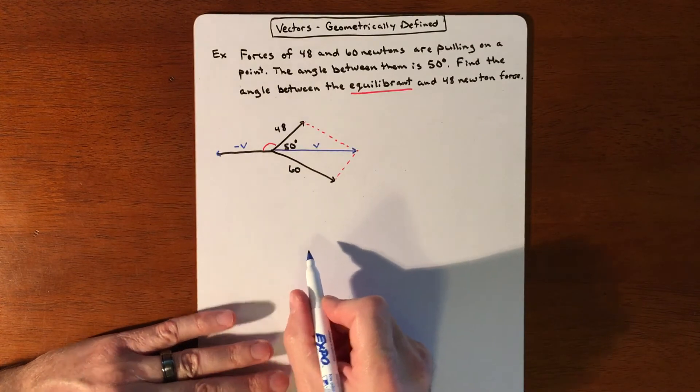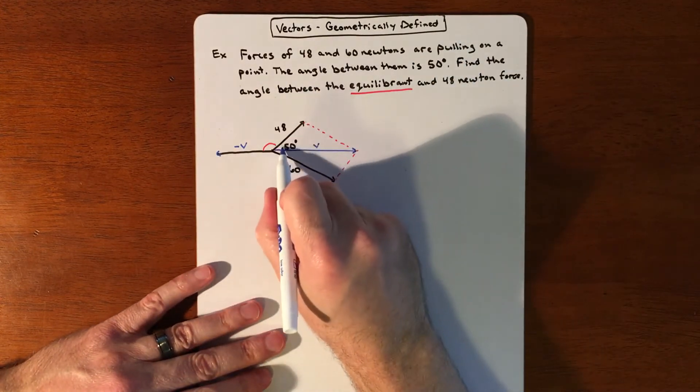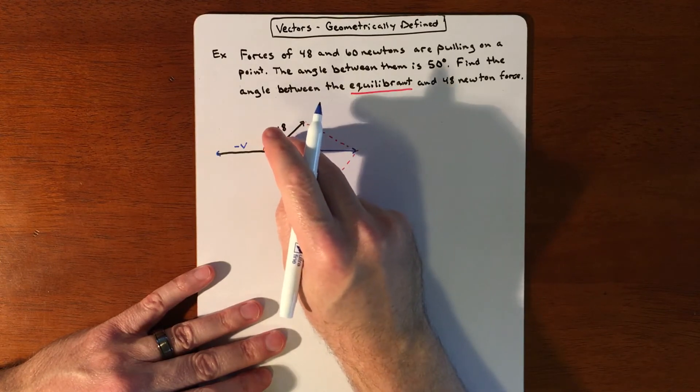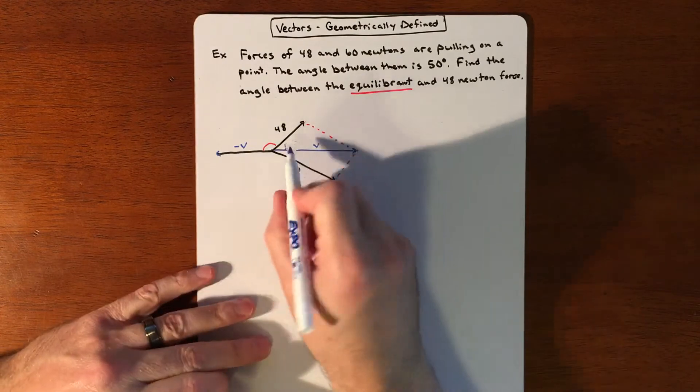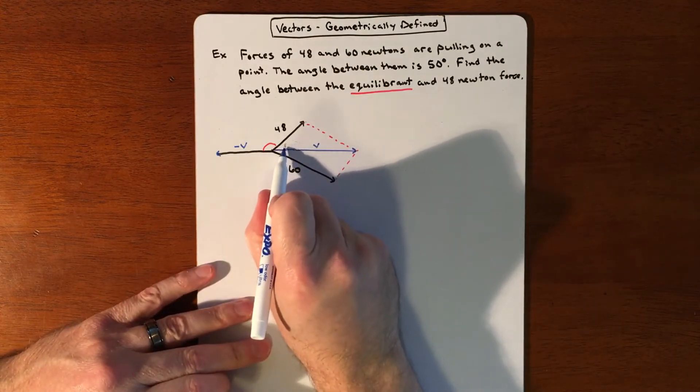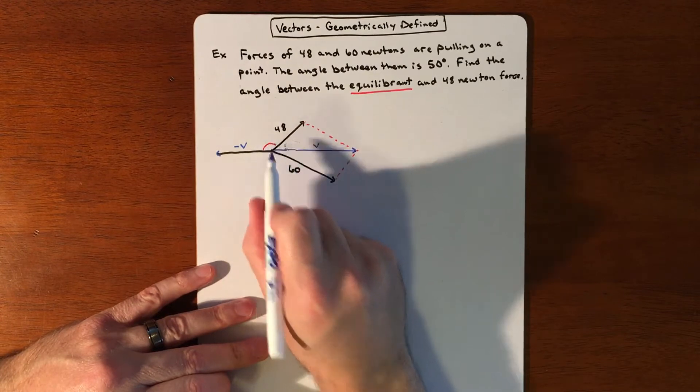I know that the whole thing here makes 50 degrees, but what I don't know is how that 50 degrees is broken up. And that's what I got to figure out is if I could figure out this angle, then I can just take 180 minus that angle to figure out that angle.